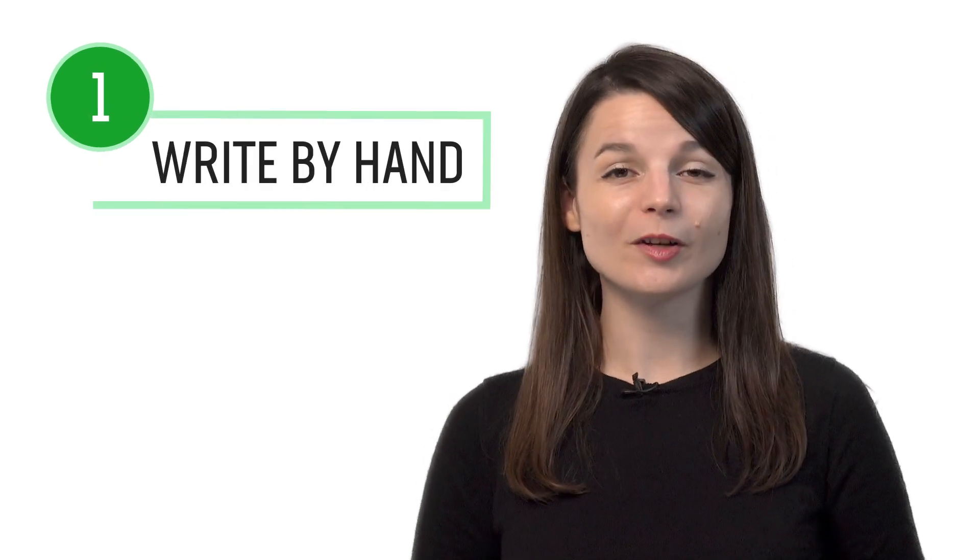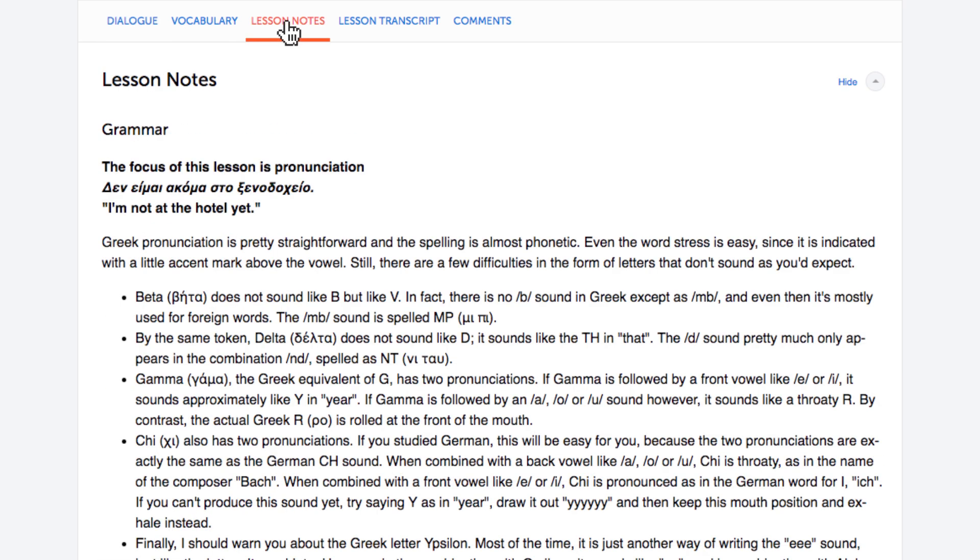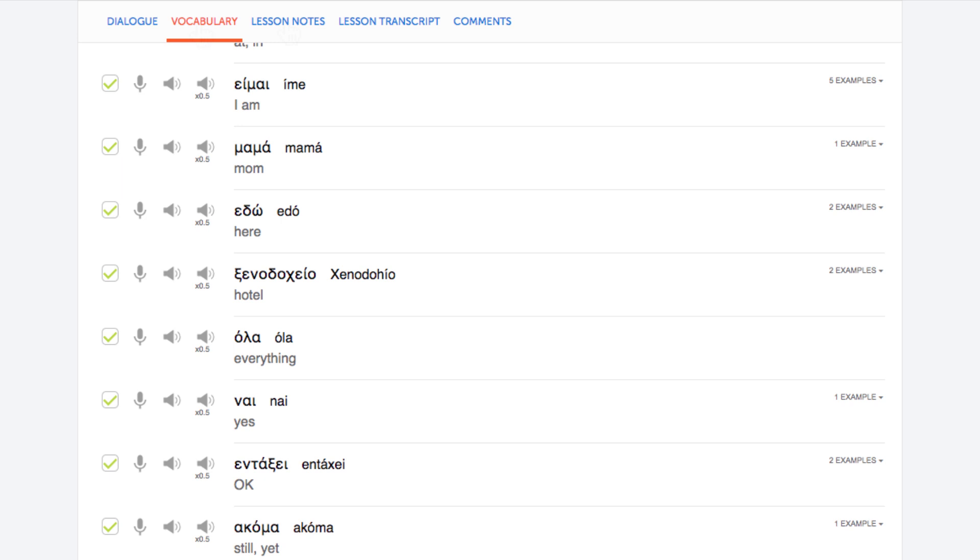Number one, write out the words and phrases by hand. One of the best ways to improve your writing is to simply write more. So write every word, phrase and sentence that you learn in the lessons by hand in a notebook. You can write out the conversations from the dialogue study tool, example sentences from the lesson notes, and words and phrases from our vocabulary lists.